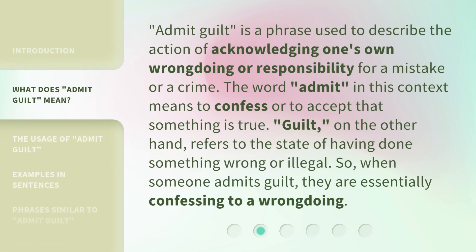'Admit Guilt' is a phrase used to describe the action of acknowledging one's own wrongdoing or responsibility for a mistake or a crime. The word 'admit' in this context means to confess or to accept that something is true. 'Guilt,' on the other hand, refers to the state of having done something wrong or illegal. So when someone admits guilt, they are essentially confessing to a wrongdoing.